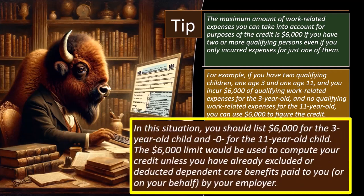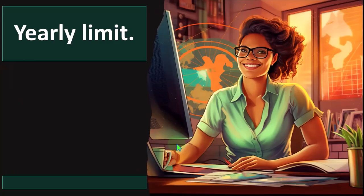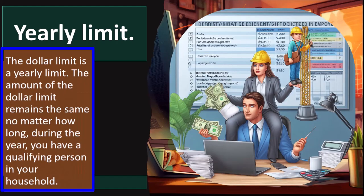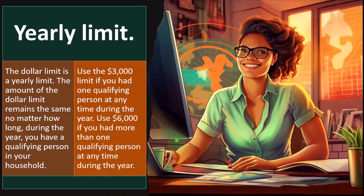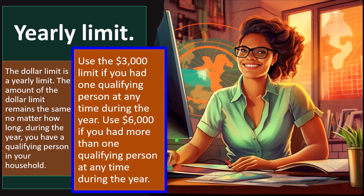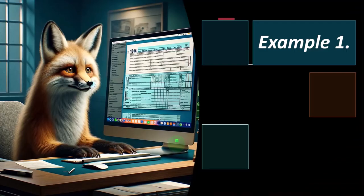In this situation you should list $6,000 for the three-year-old and zero for the eleven-year-old. The $6,000 limit would be used to compute your credit unless you have already exceeded dependent care benefits paid by your employer. The dollar limit is a yearly limit — the amount remains the same no matter how long during the year you have a qualifying person in your household. Use $3,000 if you had one qualifying person at any time during the year, $6,000 if you had more than one.